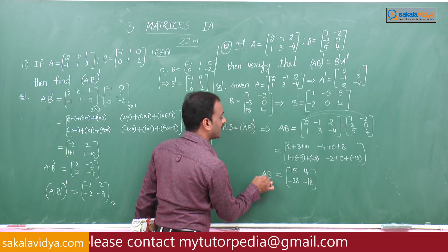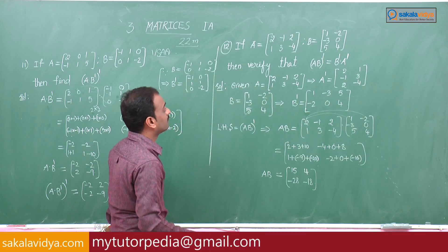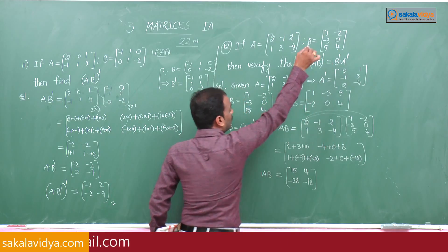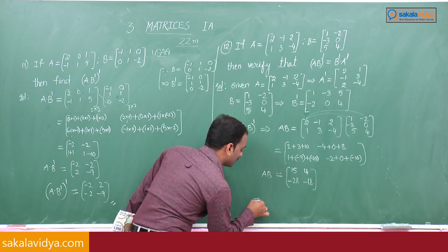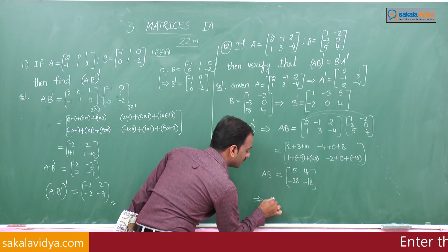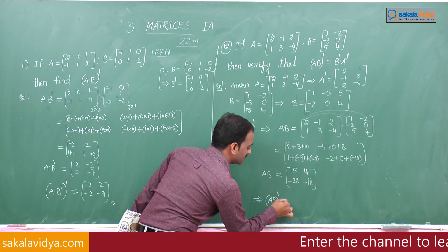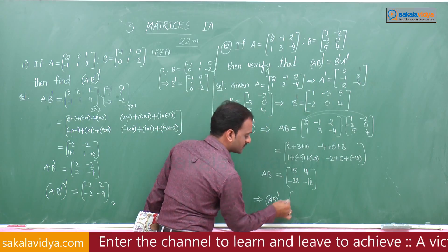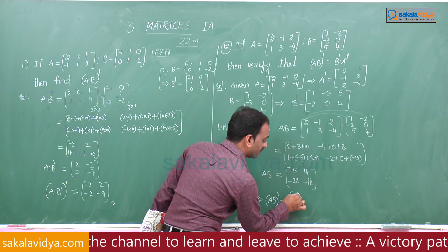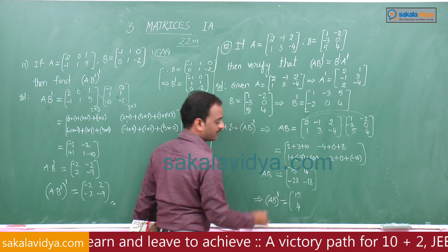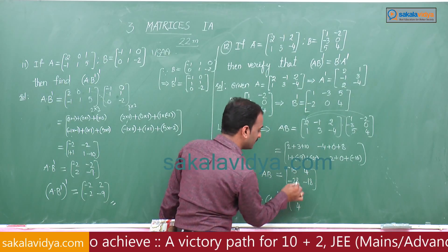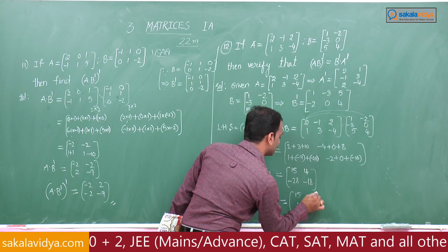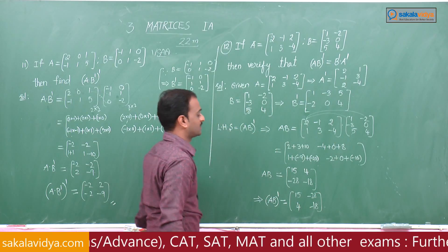This is the value of A·B only. But we need A·B whole transpose. Transposing: first row becomes first column. So A·B whole transpose equals [[15, -28], [4, -18]].